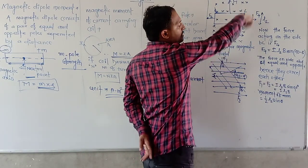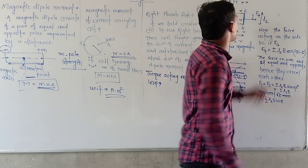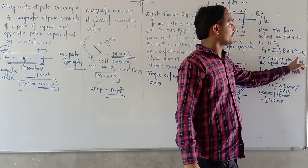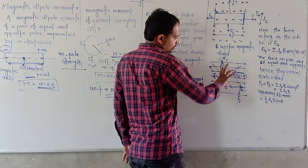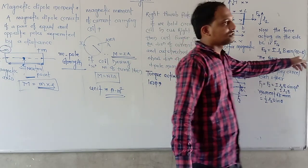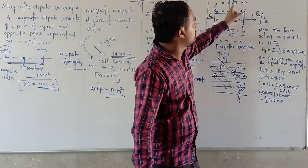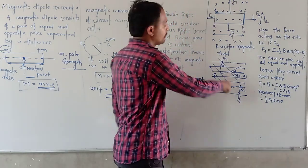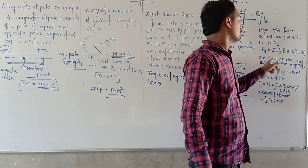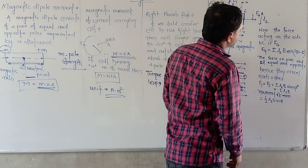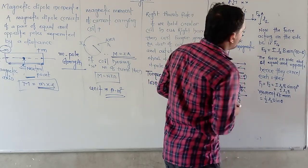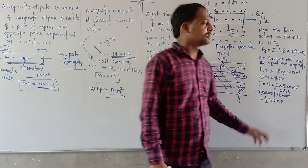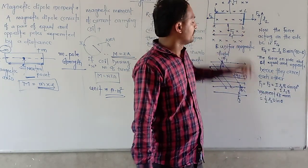The force acting on side BC is F4, and F4 is equal to IL2B sin(90° − θ), because this coil is rotated by angle θ due to the force, so the arm makes 90° − θ with the field. The forces on sides AB and CD, which are F1 and F3, are equal in magnitude and opposite in direction, so they cancel each other.